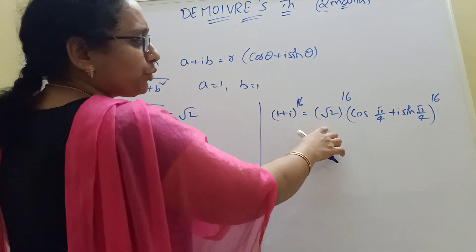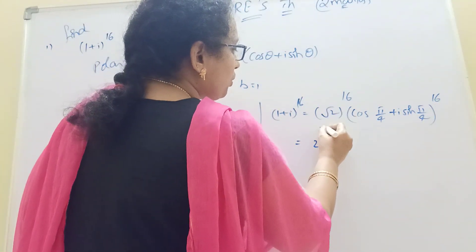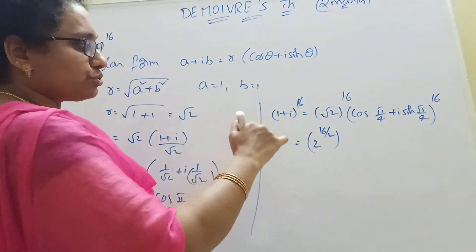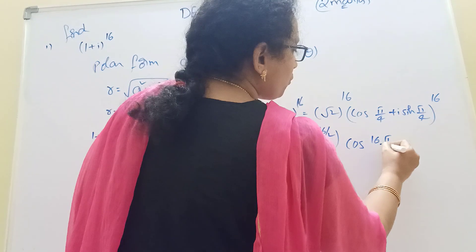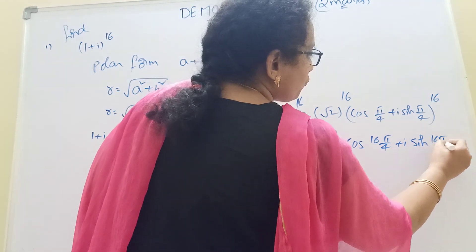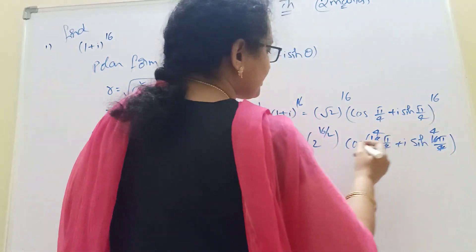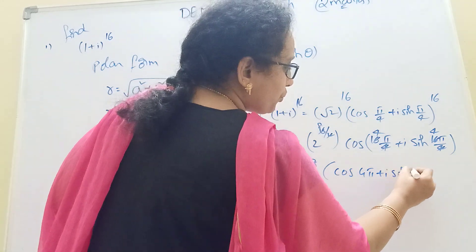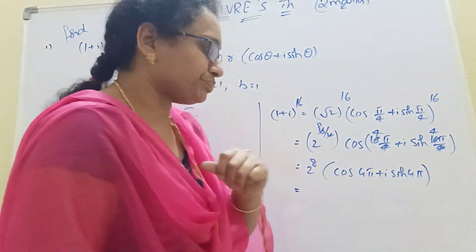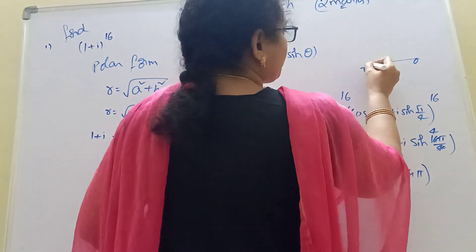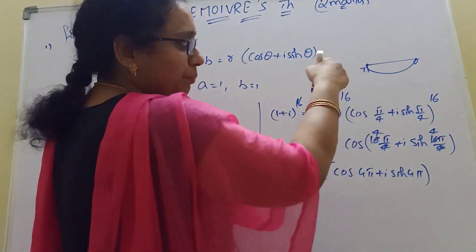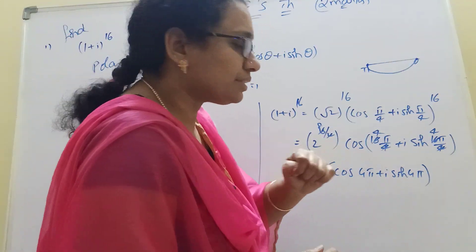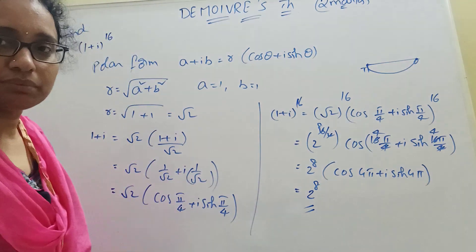Root 2 to the power 16 — that is 2 to the power 1/2, raised to 16, giving 2 to the power 8. And cos(16 pi/4) + i sine(16 pi/4). The 4 cancels, giving cos(4 pi) + i sine(4 pi). Now, 4 pi is a multiple of 2 pi, so cos(4 pi) = 1 and sine(4 pi) = 0. Therefore the value is 2 to the power 8.